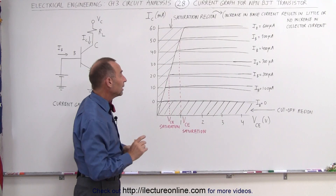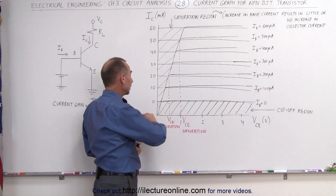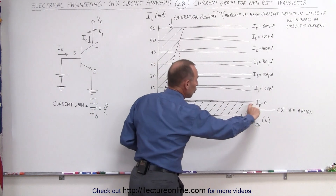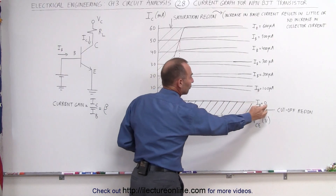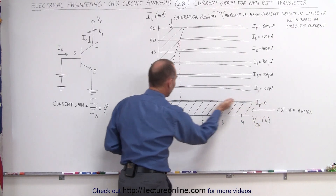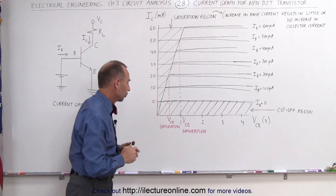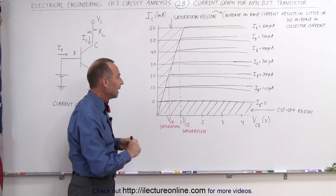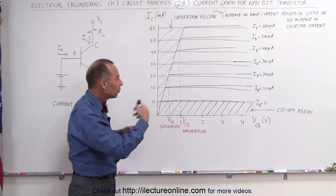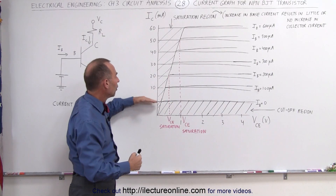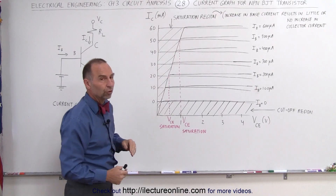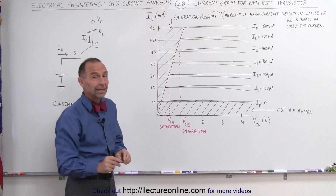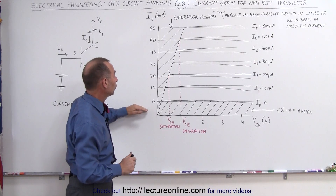There is no collector current whatsoever if there is no current at the base. So if the base current is zero, you'll get zero collector current — that's what we call the cutoff region. As you begin to increase the base current, you begin to increase the collector current as well.